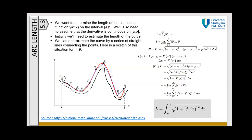We connect all these points in the same sub-interval with a straight line. So we connect point p₀ with p₁ with a straight line, then p₁ with p₂ with a straight line, and similarly p₅ and p₈ with p₉. Actually the path is a curve, but we connect it with straight lines. Each sub-interval has length delta x.